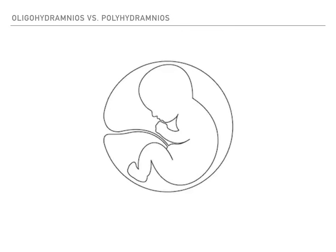Movements of amniotic fluid are done in one of two ways. The first is swallowing. If the baby swallows amniotic fluid, that fluid will move from the amniotic sac into the baby's body. So the first way we move amniotic fluid is via swallowing, and swallowing decreases amniotic fluid because it's no longer in the amniotic space - now it's in the baby's body.